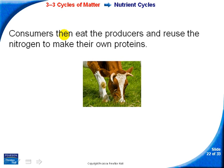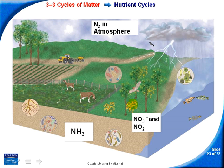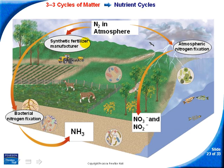Consumers eat the plants and can get nitrogen from them. Other consumers eat the consumers who ate the producers, and you can see how it cycles. Here's the nitrogen being fixated by bacteria. You can also have nitrogen put into the soil through synthetic fertilizer. Here's bacterial nitrogen fixation on land, and here it is in the water.